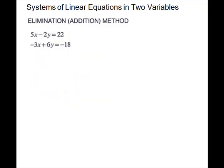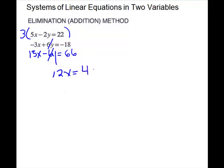For my next system of equations, I'm going to use the elimination method. I'm going to multiply my first equation by a 3 to get a negative 6y and a positive 6y. So I will multiply through by 3 and write it below. That gives me 15x minus 6y equals 66. The 6y's will cancel, leaving me 12x equals 48. Divide by 12, x equals 4.